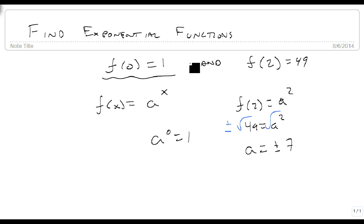However, remember there's a rule from before that says that a has to be greater than 0, so I have to ignore the minus and we just get that a is positive 7, which means that my function in this case is 7 to the x.